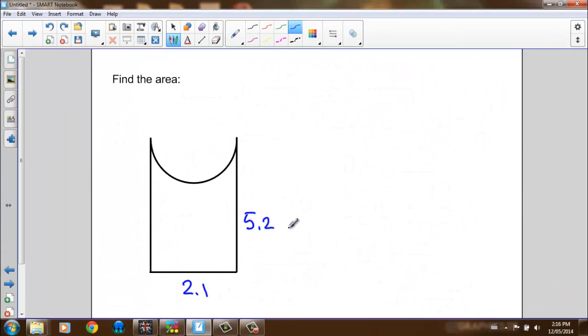In the first problem, we found the area of our shape by breaking the shape into smaller shapes that we could find the area of, and then we took those areas and we added them together. And that works sometimes, but sometimes we can't add, sometimes we have to subtract. So if I look at this problem, I can see that I have a rectangle that has a half circle cut out of it.